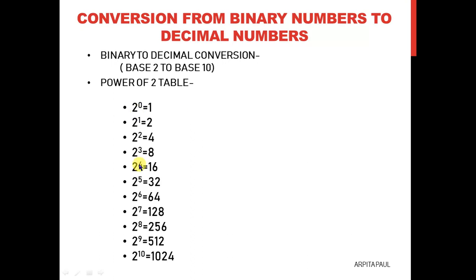So this is how it looks like: 2 to the power of 0 equals 1, 2 to the power of 1 equals 2, 2 to the power of 2 equals 4, 2 to the power of 3 equals 8. And this is how it continues up to 2 to the power of 10.